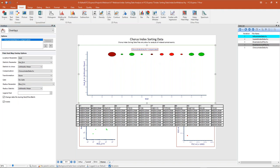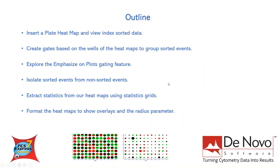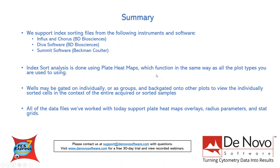With that, we've come to the end of our examples today. As a reminder, all of the data files we've worked with today support heat map overlays, the radius parameters, and the stats grids. Keep in mind that the heat maps function in the same way as all the other plot types you're used to using, and the well gates will function the same way as well. The index sorting data analysis will hopefully be a very familiar and simple process using our plate heat map plots.